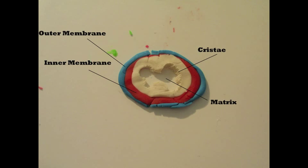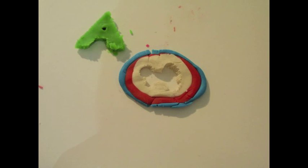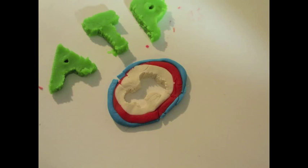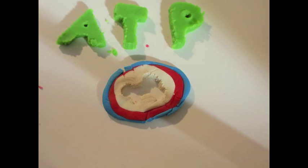Mitochondria has a double membrane, its own DNA, and cristae that surrounds the central matrix region. It is the key organelle in cellular respiration, which produces ATP, or energy, for the body.